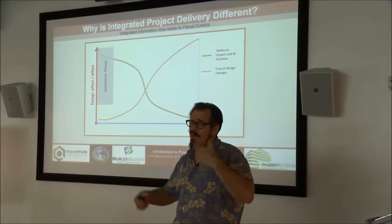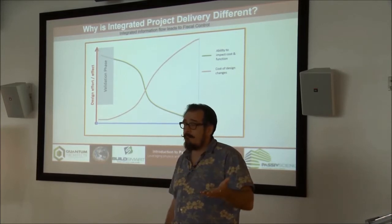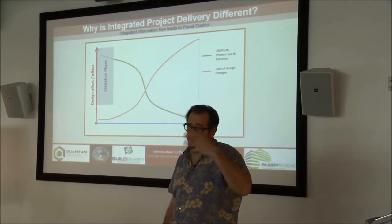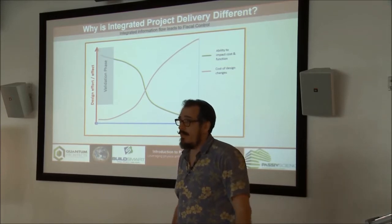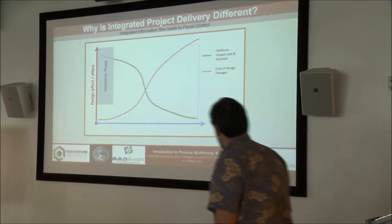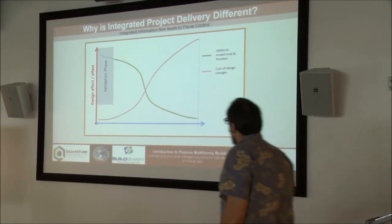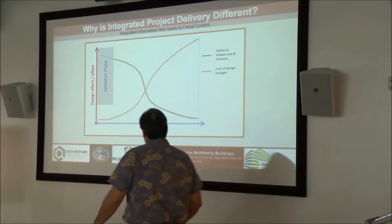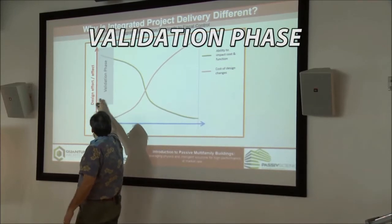Sometimes you don't. We're doing a project where we had to kick a plumber out. After three meetings, it was obvious he was not the right guy — he was really great in the interview. But what we do in relational contracting is we have this validation phase. This is where we form the group.